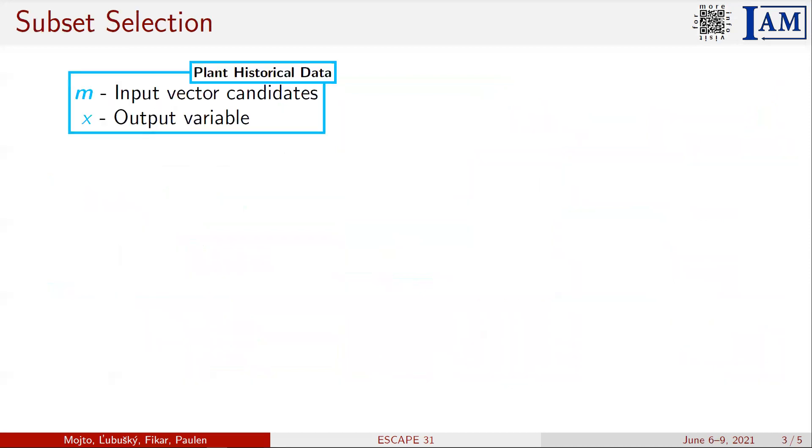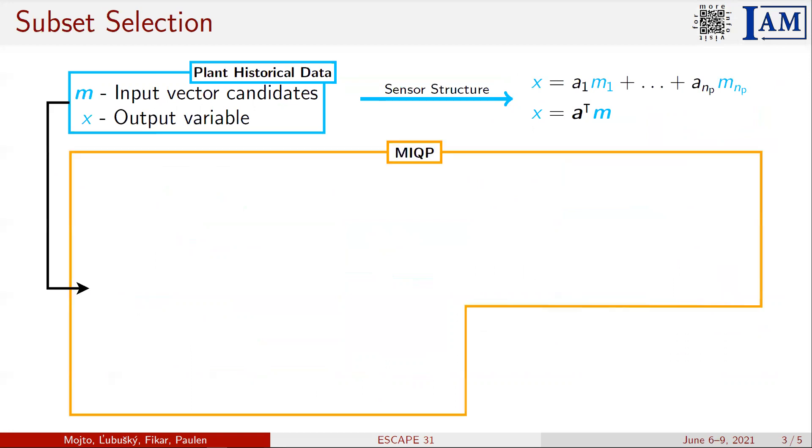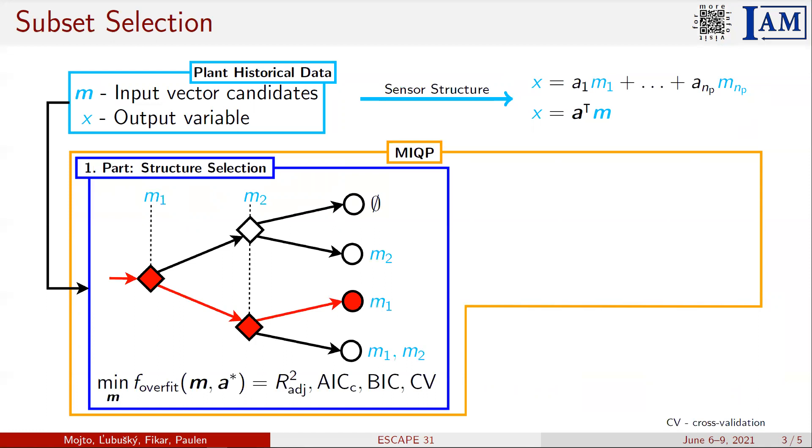Subset selection uses the input and output data to design linear structure of inferential sensor. The available data enters the following mixed integer quadratic programming problem consisting of two parts. The structure of the inferential sensor is designed in the first part of MIQP.